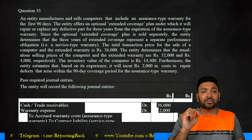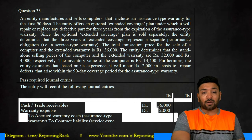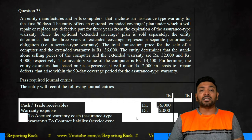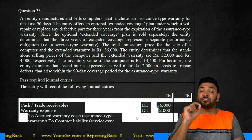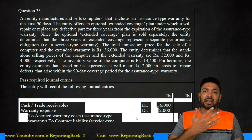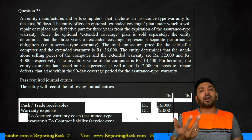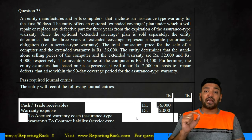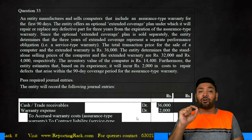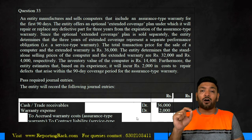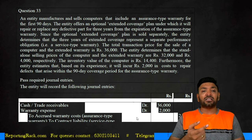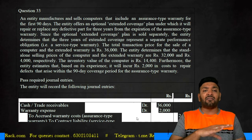Let's start looking at question number 33. We are continuing with IND AS 115. An entity manufactures and sells computers that include an assurance-type warranty for the first 90 days — assurance that the product is working fine. If any fault is found, the product is either returned, replaced, or repaired. The entity offers an optional extended coverage plan under which it will repair or replace any defective part for three years from the expiration of the assurance-type warranty.